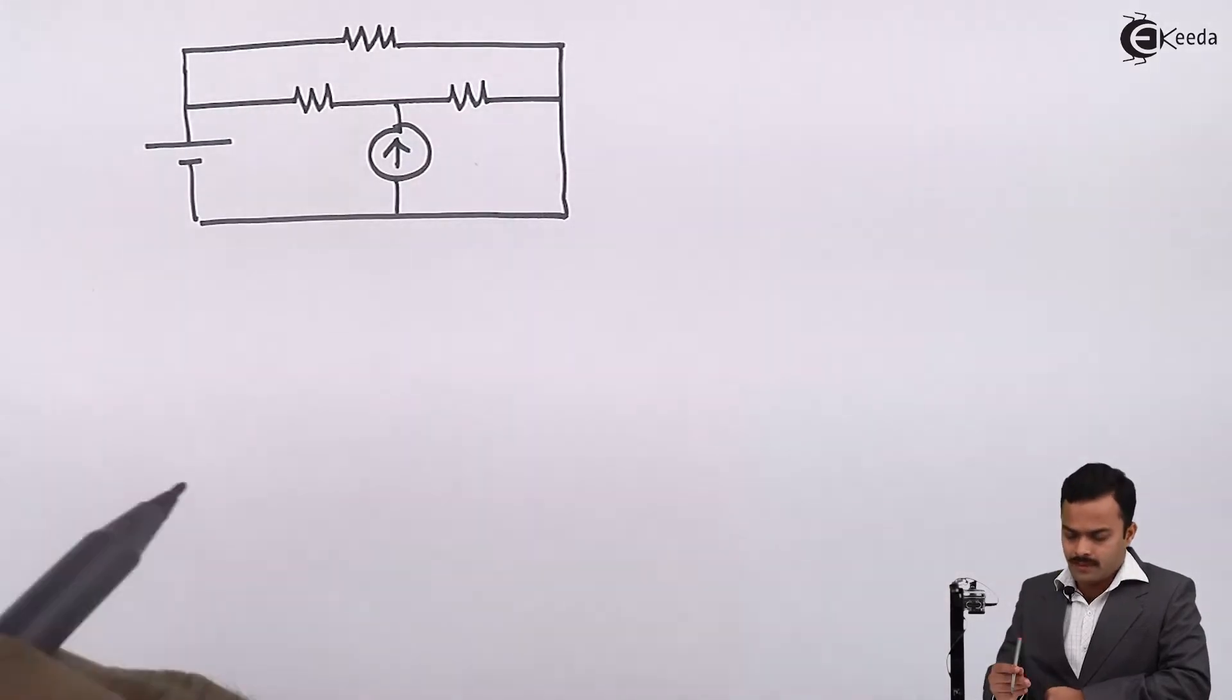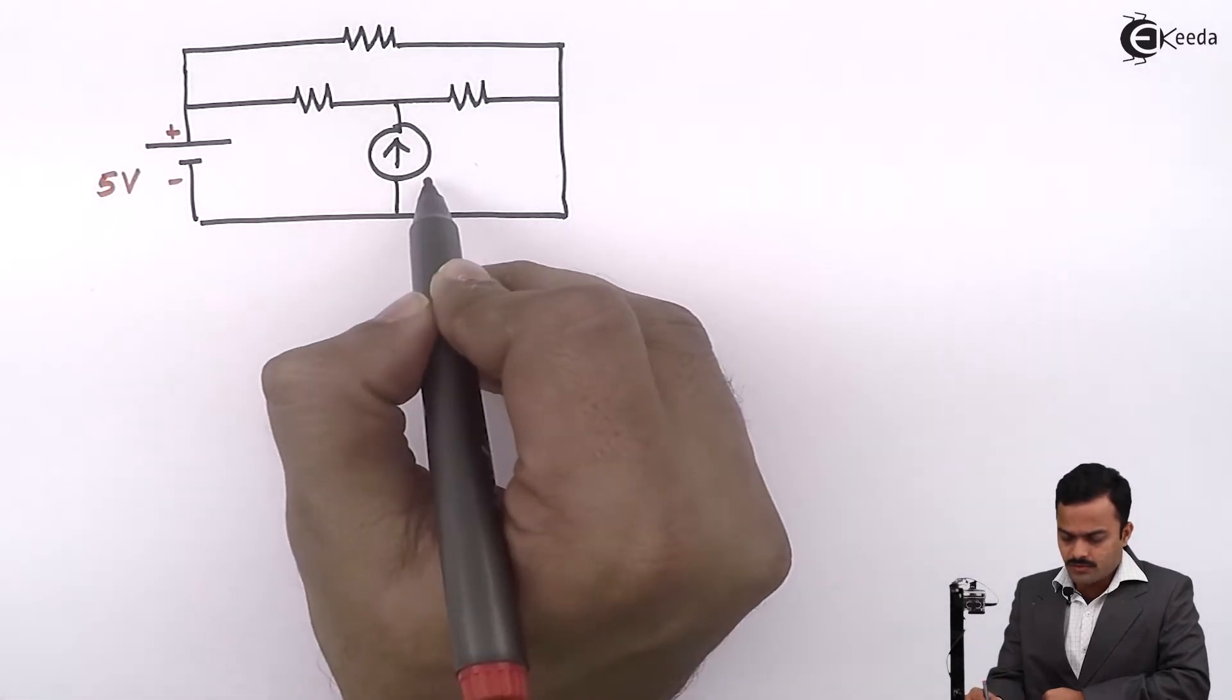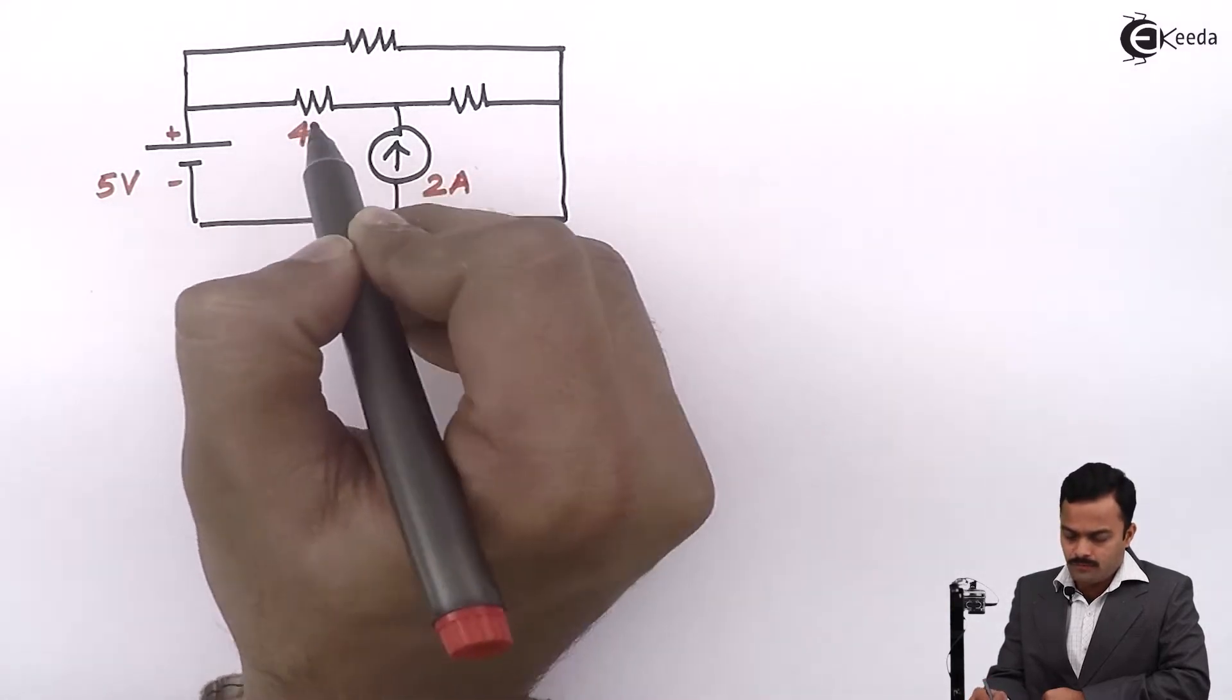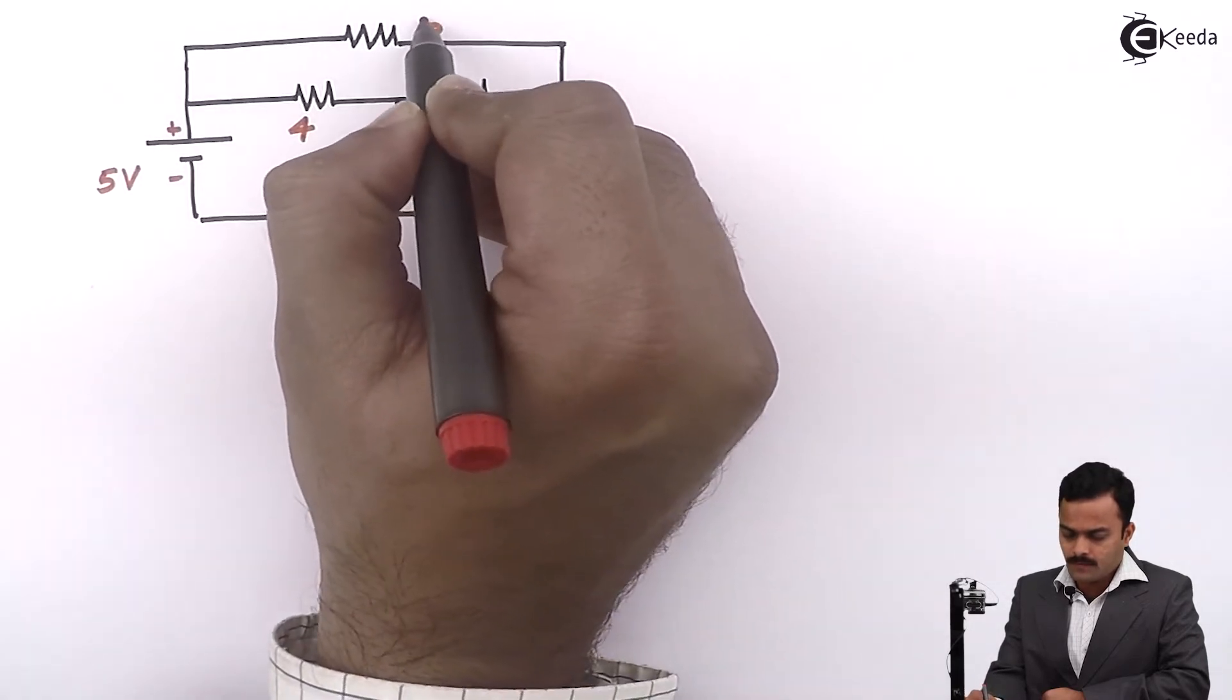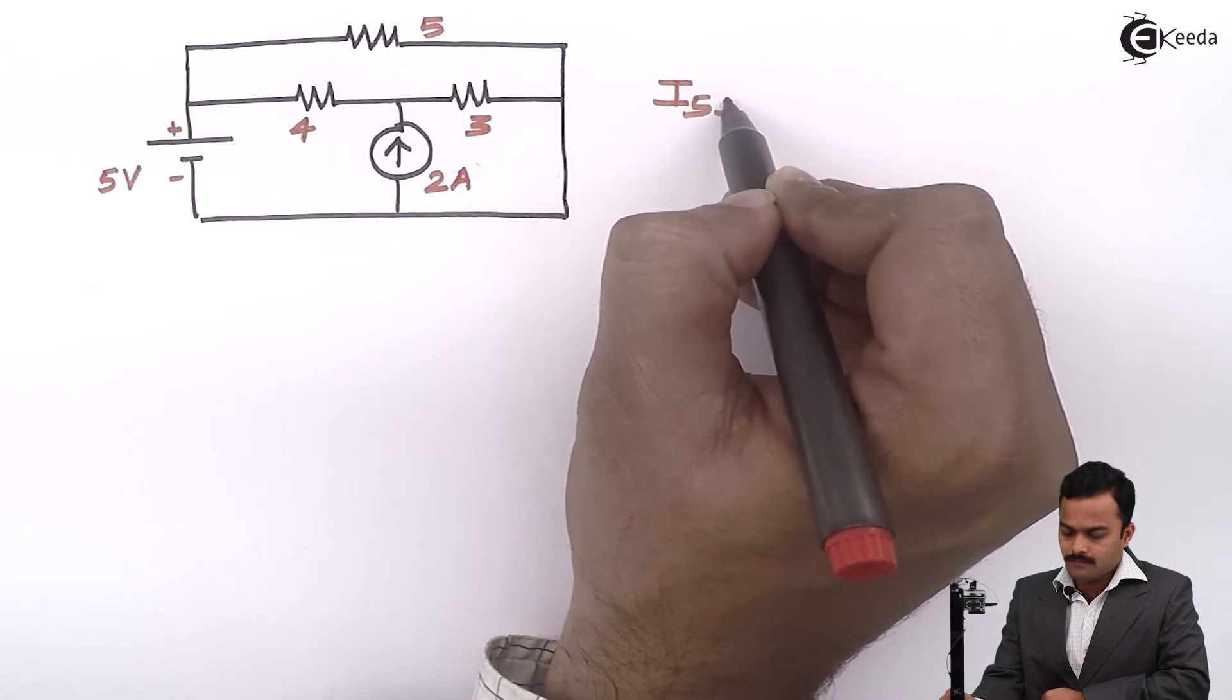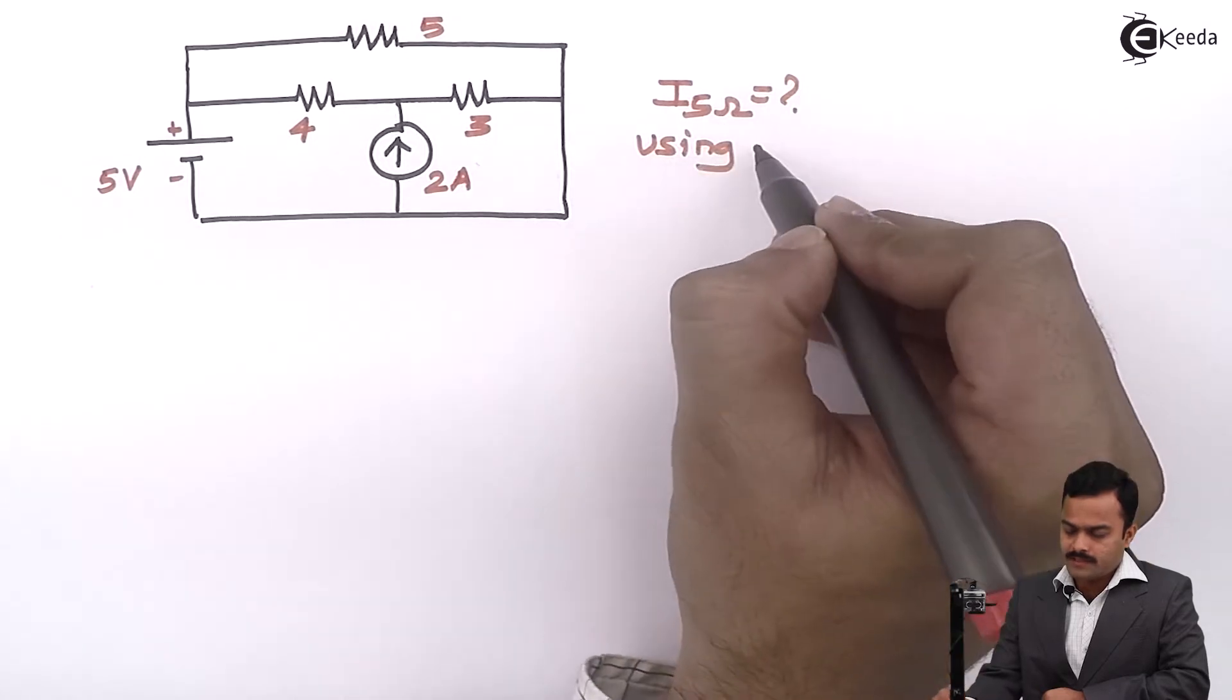So I have taken a problem where a voltage source of 5 volt is given, current source of 2 ampere, and resistances are of 4 ohm, 3 ohm, and 5 ohm. The objective is to get current flowing through 5 ohm using mesh analysis.